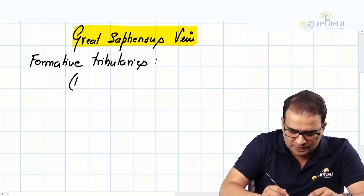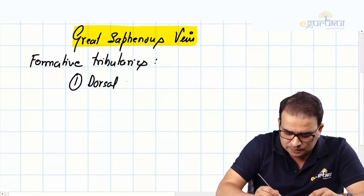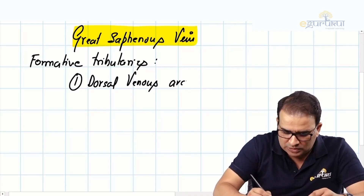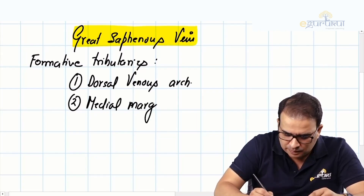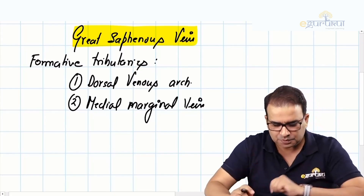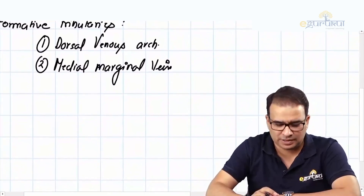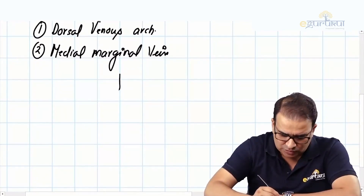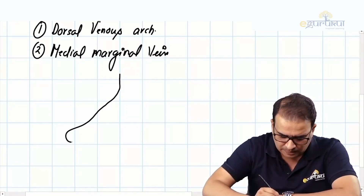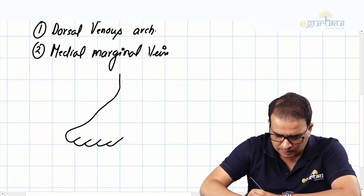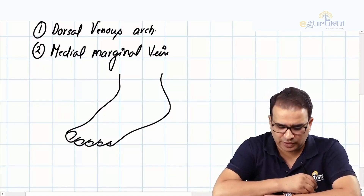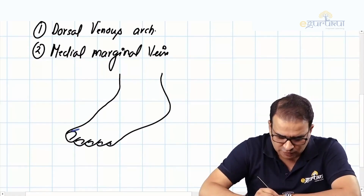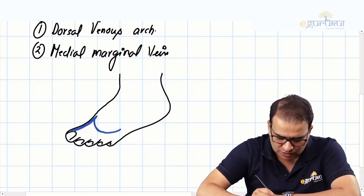The formative tributaries for the great saphenous vein: number one is the dorsal venous arch, and number two is the medial marginal vein. If we imagine this is the dorsum of the foot, there is a vein running along the medial margin of the great toe — this is called the medial marginal vein. And here we have an arch on the dorsum called the dorsal venous arch.